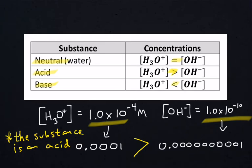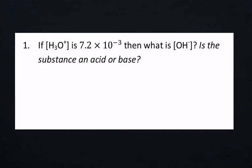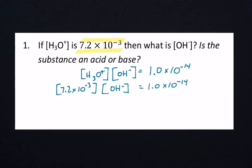Let's do another problem with some numbers. Question number one: if H3O+ concentration is 7.2 times 10 to the negative 3rd molar, then what is OH-? Is the substance an acid or a base? Write out that formula from our notes: H3O+ times OH- equals 1.0 times 10 to the negative 14th. We're going to plug that 7.2 times 10 to the negative 3rd number into our formula and get OH- by itself by dividing both sides.